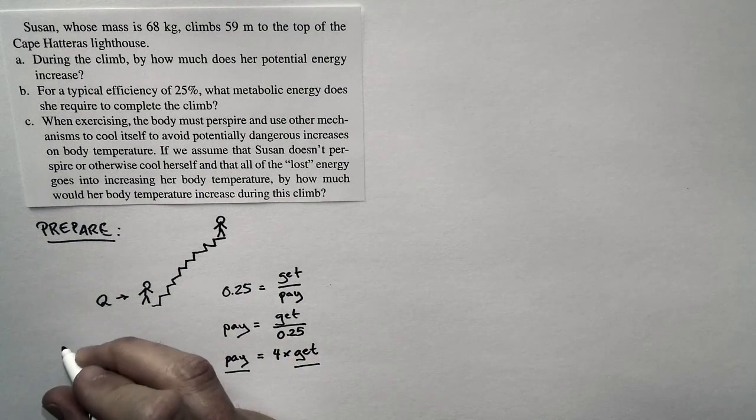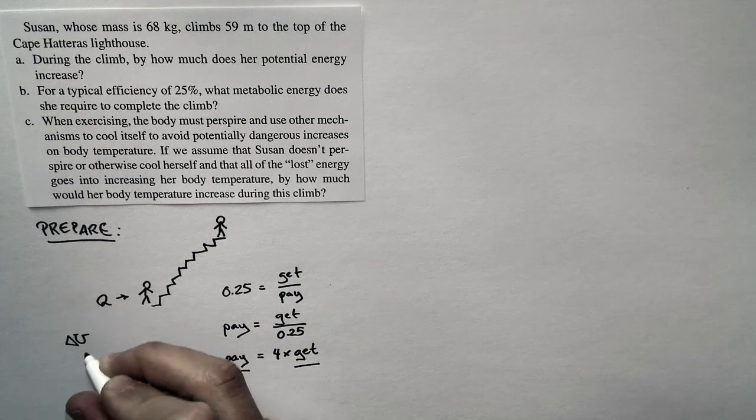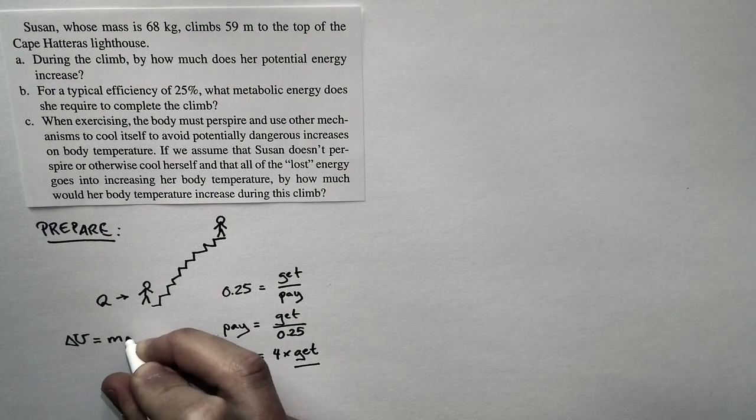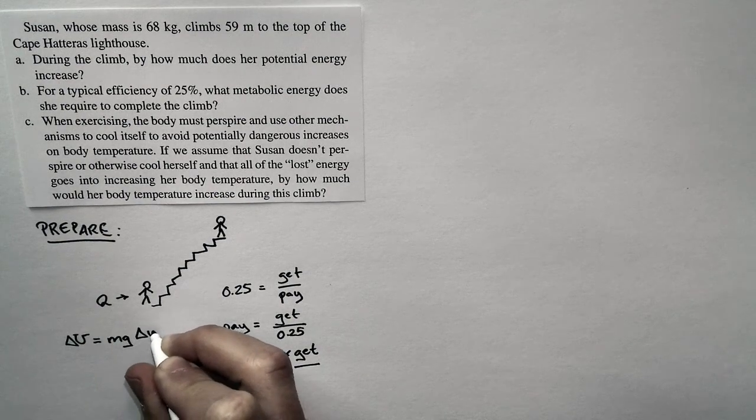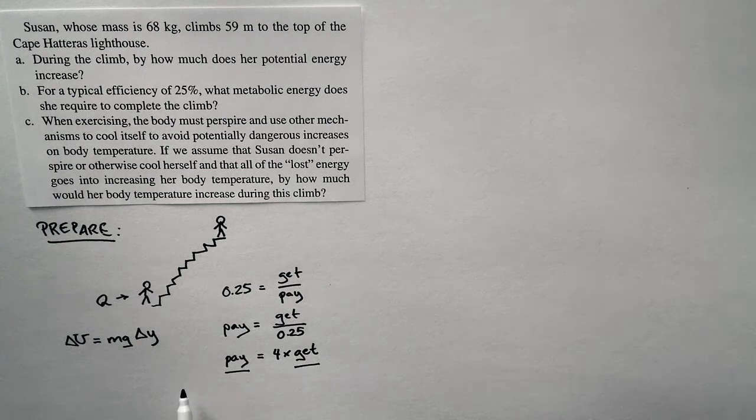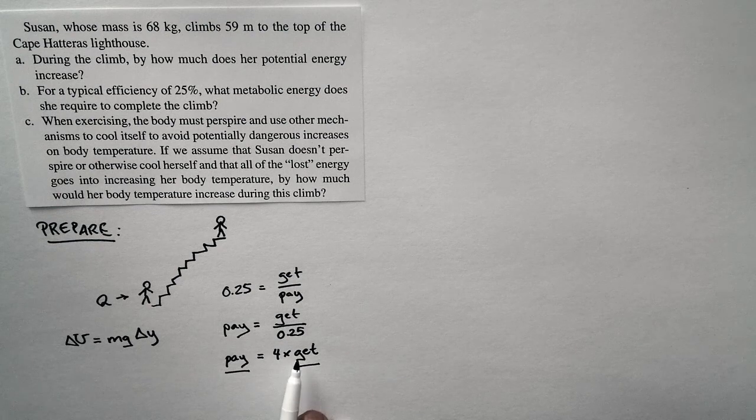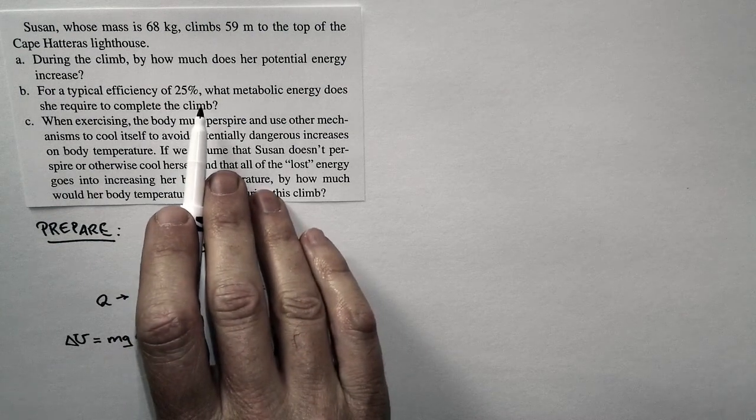For the first step, we're going to compute the change in potential energy. The change in potential energy is just m times g times delta y. To compute how much it costs her to do this, we're just going to take what we get, which is this potential energy multiplied by four. That's the metabolic energy.